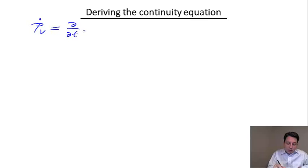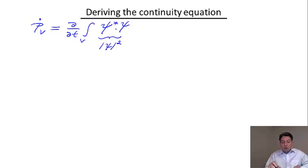And the Born rule basically implies that I calculate the derivative of this integral over the volume of the absolute value of my wave function squared. And the absolute value can be written, of course, by definition, as a product of the wave function and its complex conjugate, everything integrated over the volume.